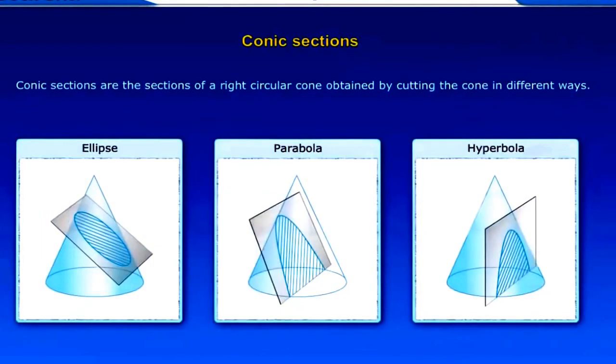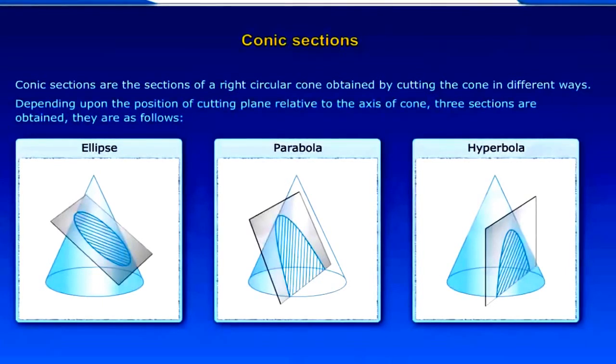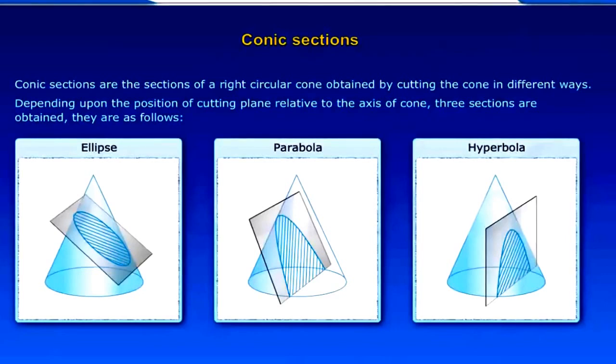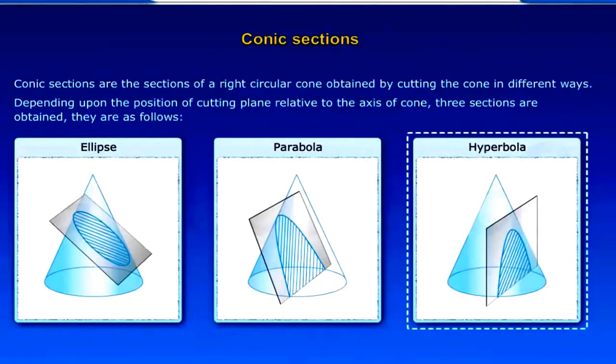Conic Sections are the sections of a right circular cone obtained by cutting the cone in different ways. Depending upon the position of cutting plane relative to the axis of cone, three sections are obtained. They are as follows: Ellipse, Parabola, Hyperbola.